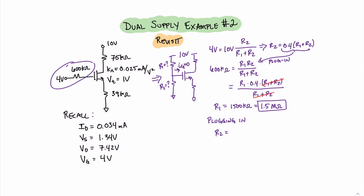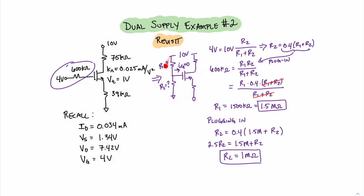Now, it's a simple matter of using our previous equation for R2 and plugging in R1. Plugging in the value for R1, we find that R2 equals 0.4 times 1.5 megaohms plus R2. Moving the 0.4 to the left side, we get 2.5 R2 equals 1.5 mega plus R2. Isolating R2, we find that R2 equals 1 megaohm. And now we can see how we can take a dual supply circuit and turn it into a single supply circuit. Of course, this is not a one-way transaction — we can go from a single supply circuit over to a dual supply circuit using the Thevenin equivalent of the left side.